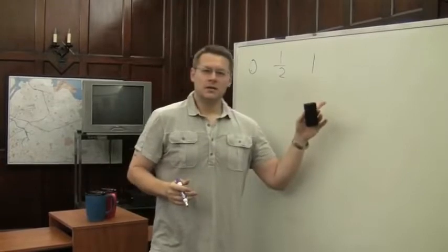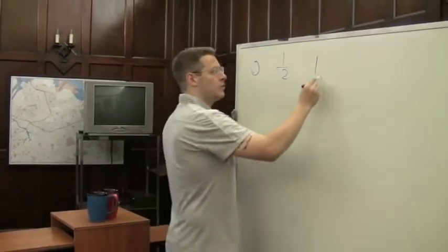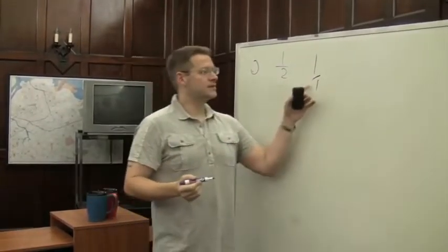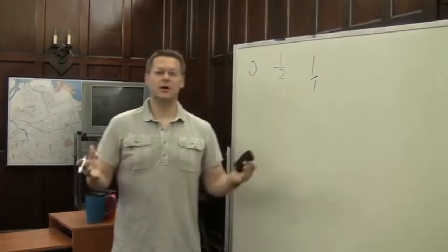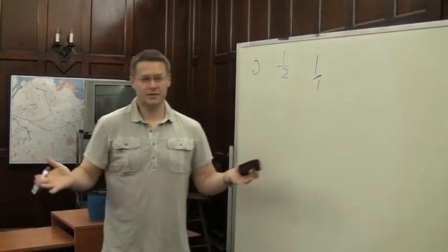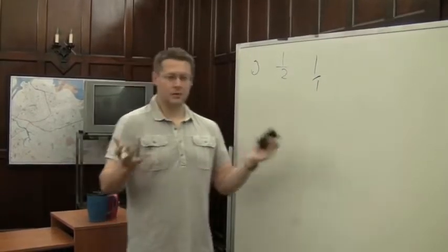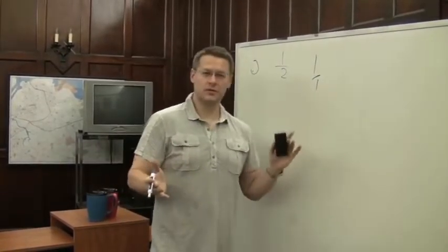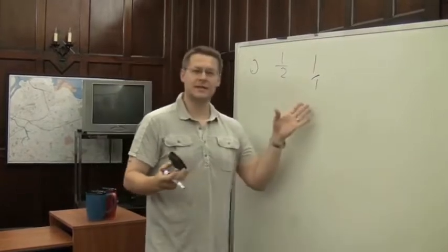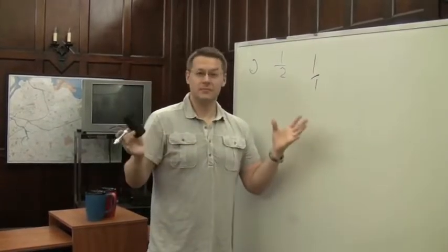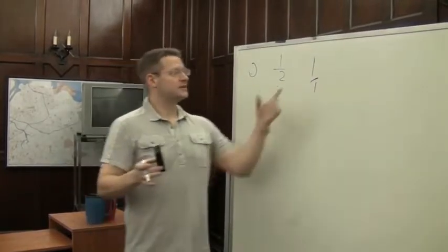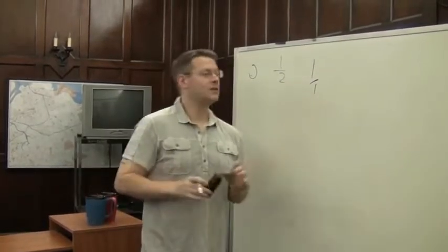The probability of me having a square circle is zero — it's impossible. A one would be one over one, or 100%, meaning something that's absolutely certain. So if I say tomorrow it will either rain or it won't rain, no matter how things turn out, it's either going to rain or not rain, so that statement is going to be true every single time — it has no real content.